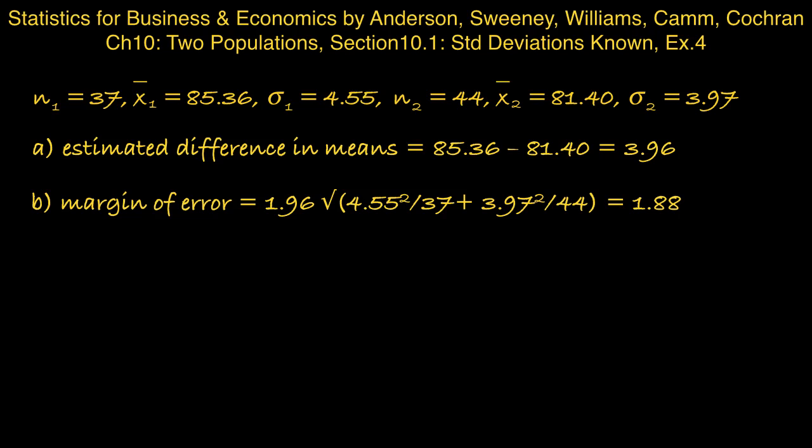And Part C: What is a 95% confidence interval estimate of the difference between the population mean ratings for the two sizes of ships? So we'll take the point estimate, 3.96, plus or minus the margin of error, 1.88. And that will give us a lower bound of 2.08 and an upper bound of 5.84.